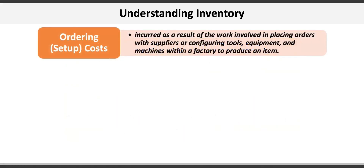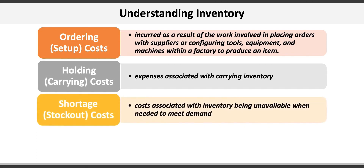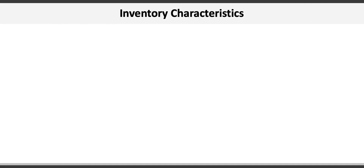Inventory costs can be classified into four major categories. The first is ordering or setup costs, incurred as a result of the work involved in placing orders with suppliers or configuring tools, equipment, and machines to produce an item. Inventory holding or carrying costs are the expenses associated with carrying inventory. Shortage or stockout costs are those associated with inventory being unavailable when needed to meet demand. The unit cost of a SKU is simply the price paid for goods purchased or the internal cost of producing an item.